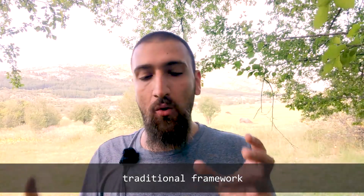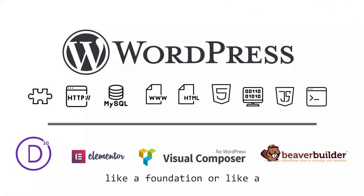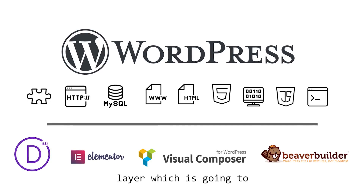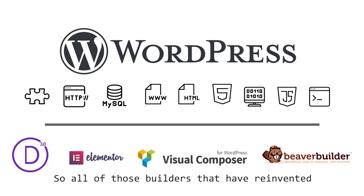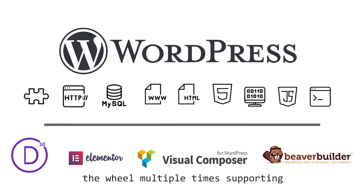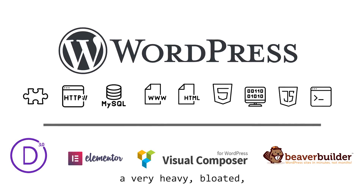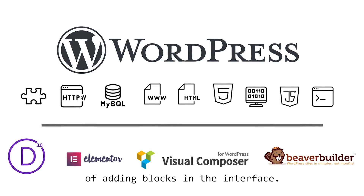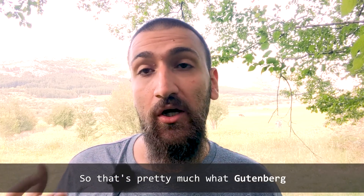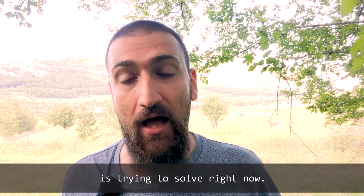Moreover, there's no traditional framework — no foundation, no layer — that lets you build specific blocks in the backend. So all of those builders have reinvented the wheel multiple times, supporting a very heavy, bloated, complicated code base, only to be able to work around the problem of adding blocks in the interface. That's pretty much what Gutenberg is trying to solve right now.